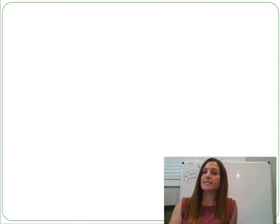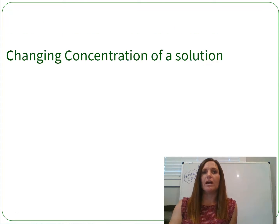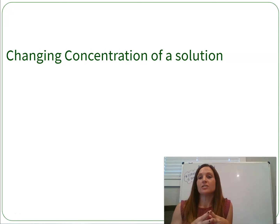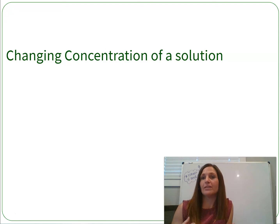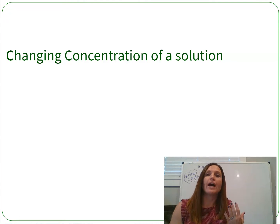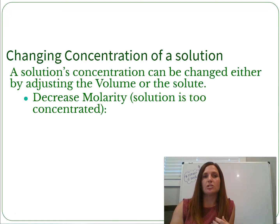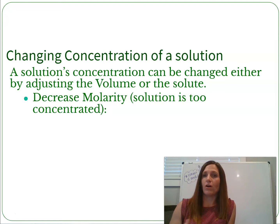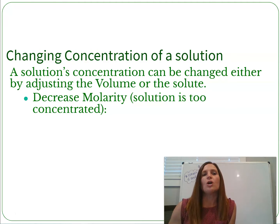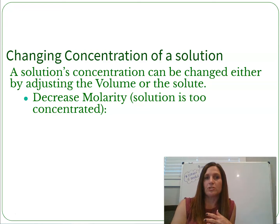We are going to be looking at the last math we need to do for the chapter, which is called changing concentrations of a solution. Imagine that you already have a solution made — a stock solution that already exists — and you need to alter it in some way to make the solution that you want. There are two ways to change the concentration: you can either adjust the volume or the amount of solute. One of the most common things we do in chemistry is called a serial dilution.